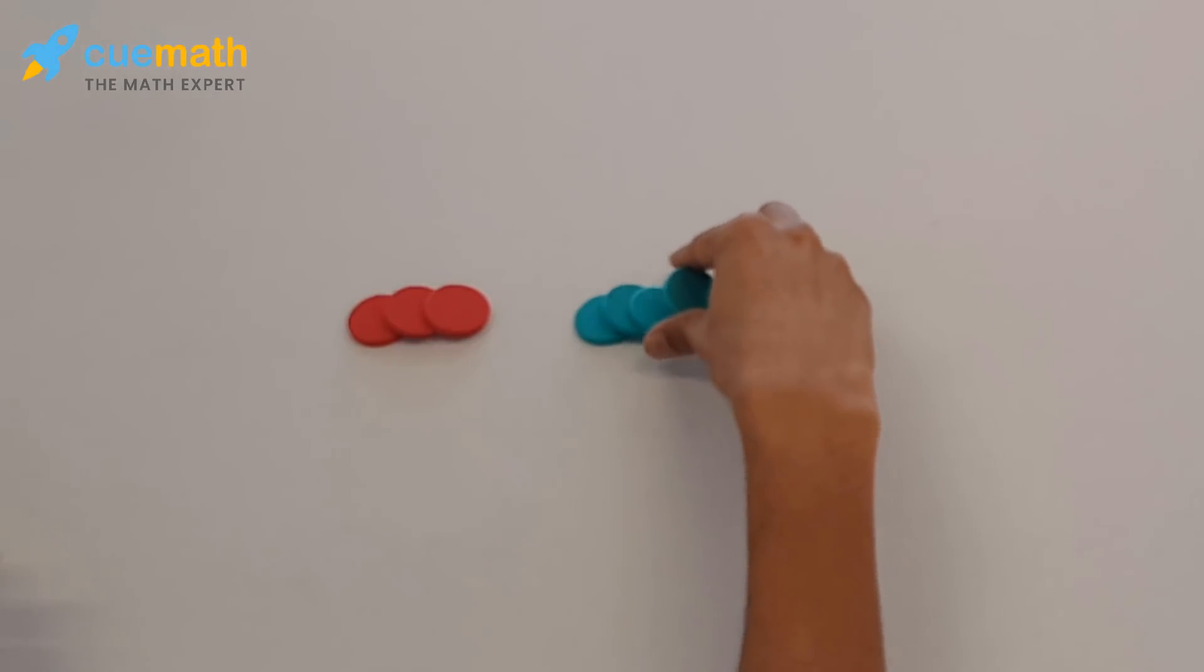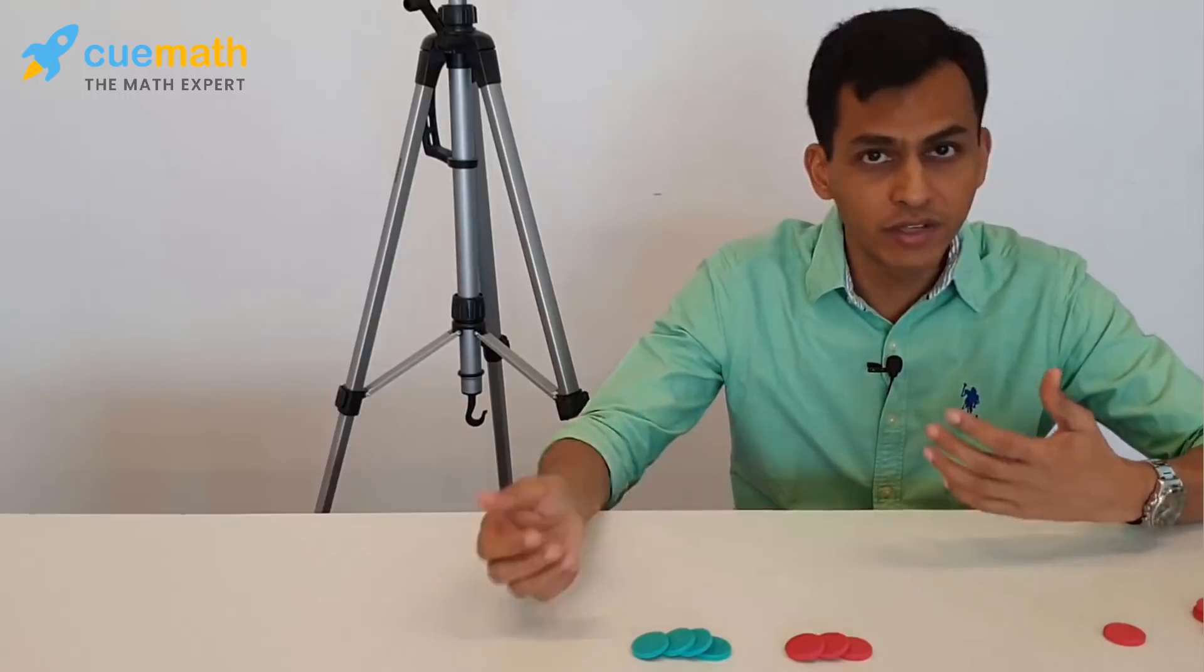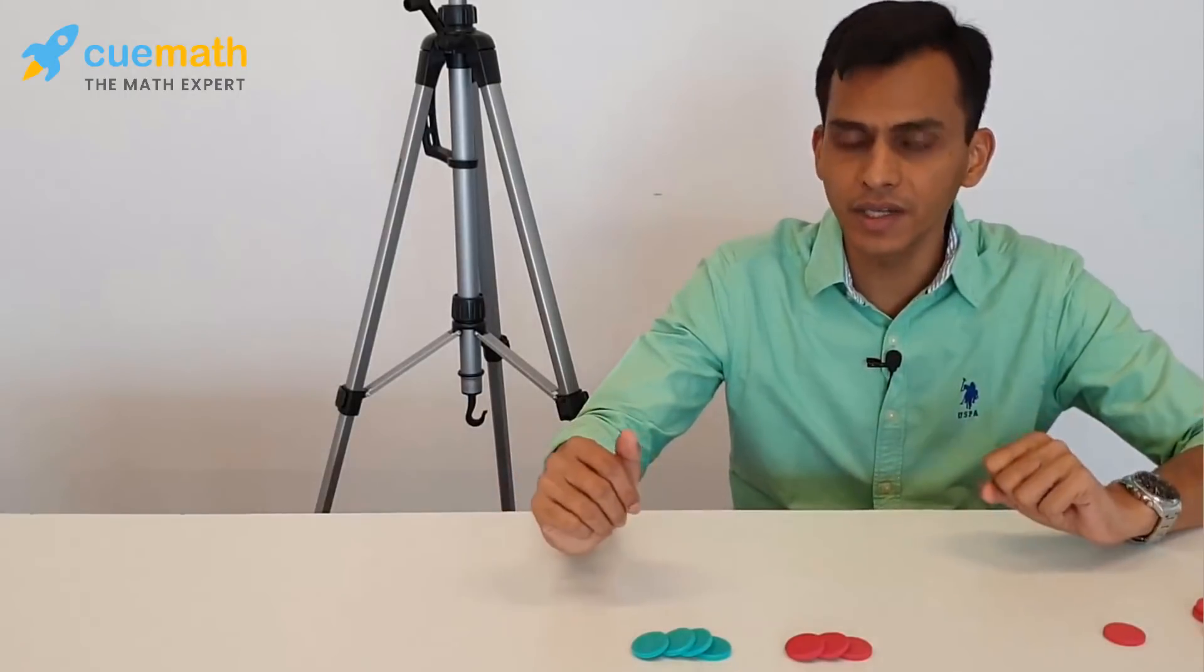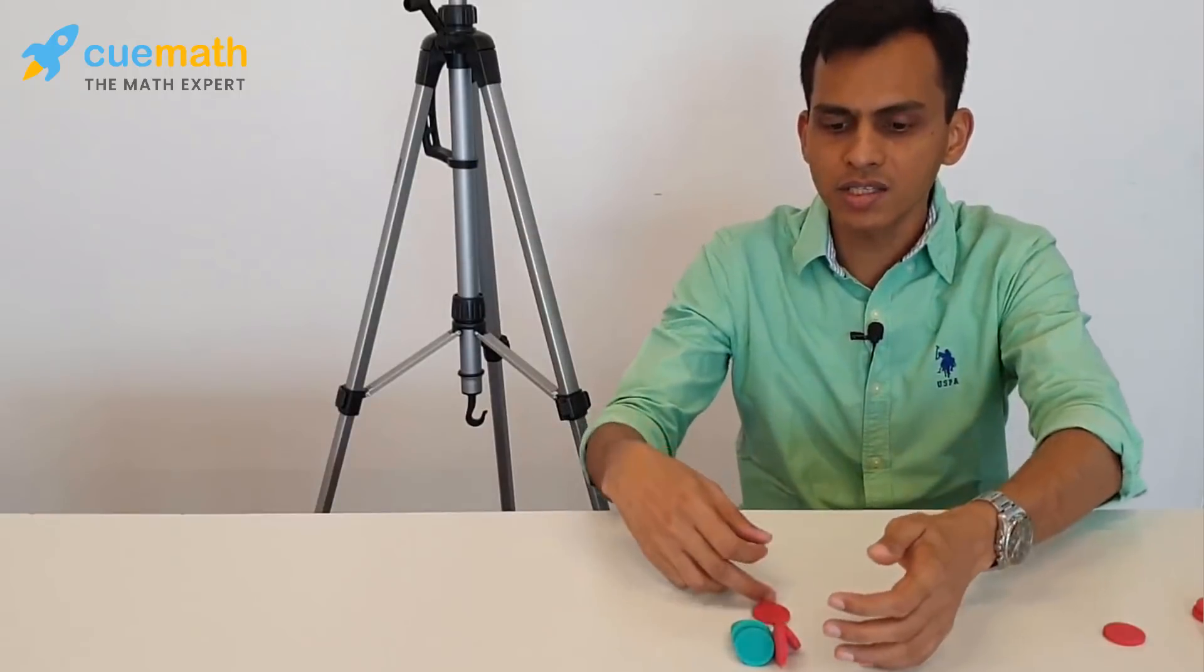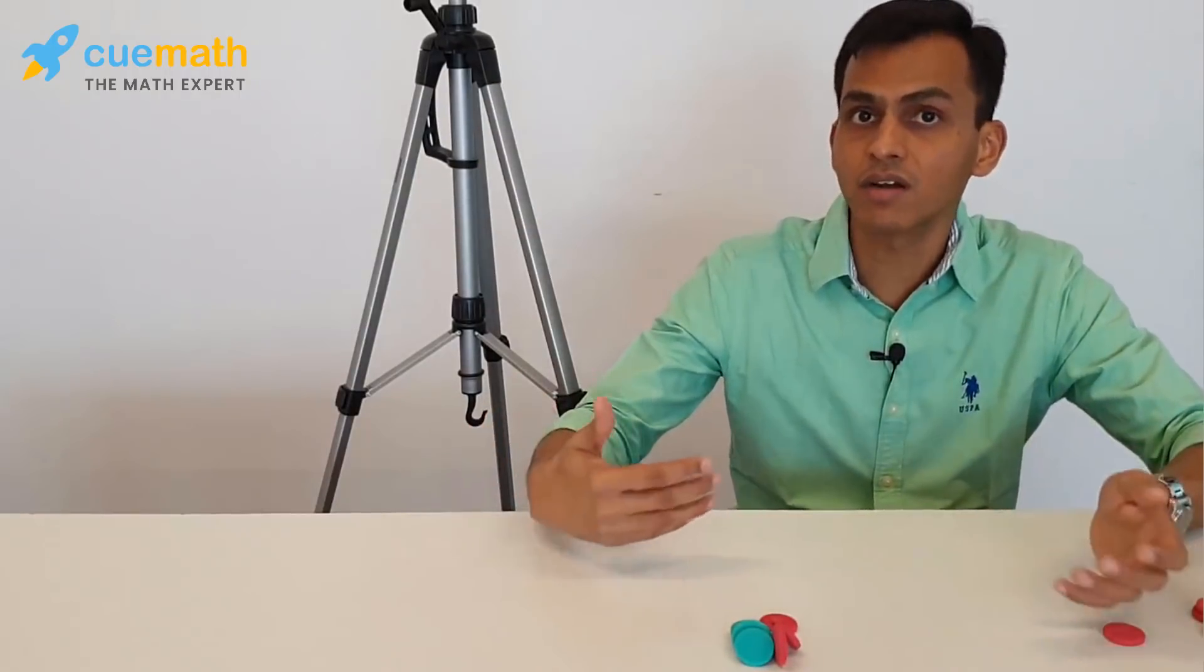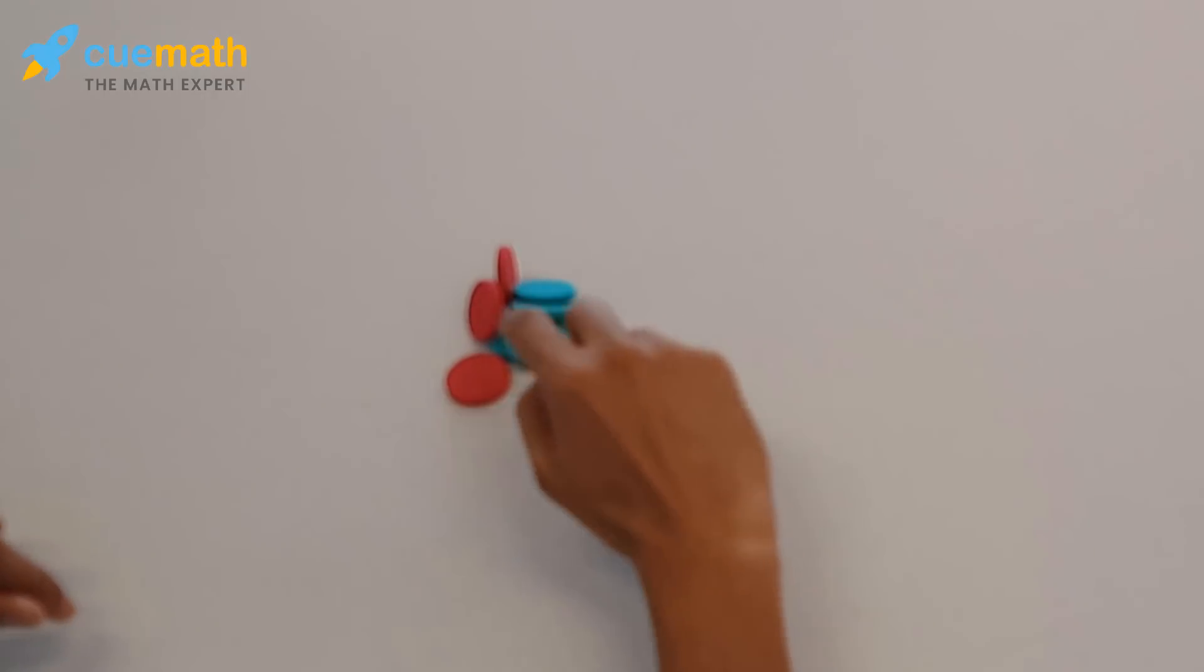You could use different colors or you could even use colors of the same kind. Addition is putting together, so ask them how many counters there are in total now that you've put them all together. Simply count.